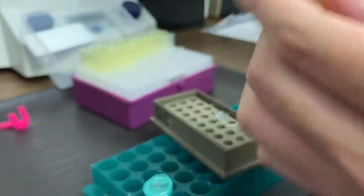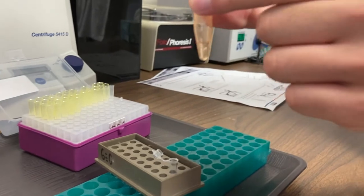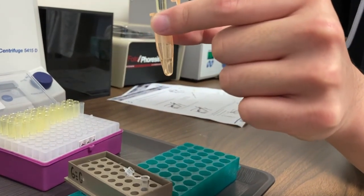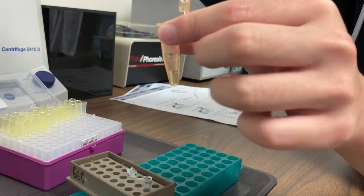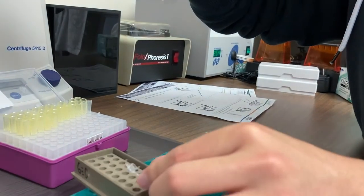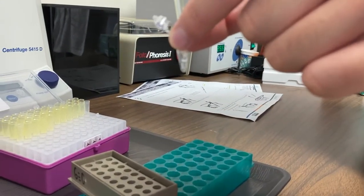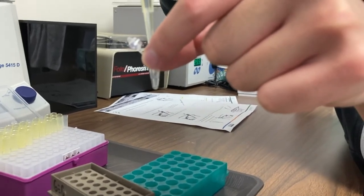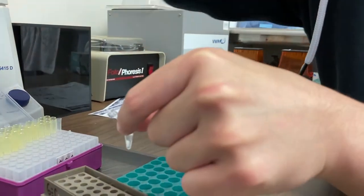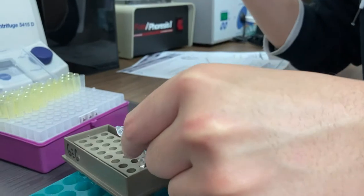After that, we'll get a fresh tip, and we'll add our primer mix. What the primer mix does is it allows us to make millions of copies of our exact target DNA. We don't want to make millions of copies of any DNA. The primer mix allows us to be specific about what we're amplifying.